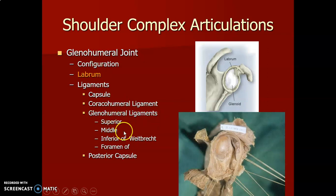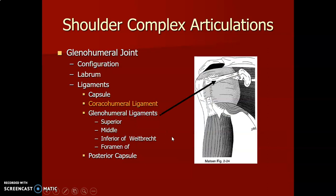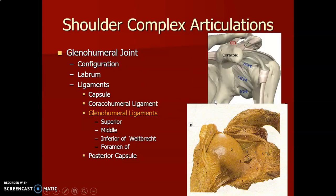The coracohumeral ligament runs from the coracoid to the humerus. The glenohumeral ligament has superior, middle, and inferior parts. There is also the coracoclavicular ligament and the coracoacromial ligament from the coracoid process.